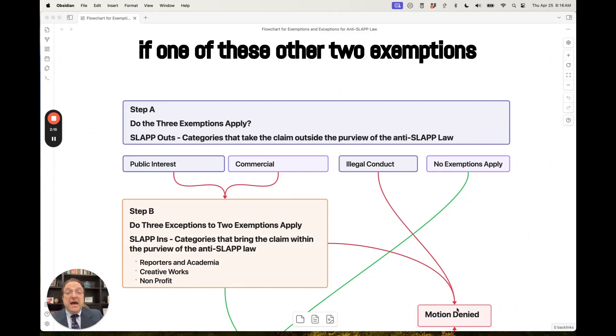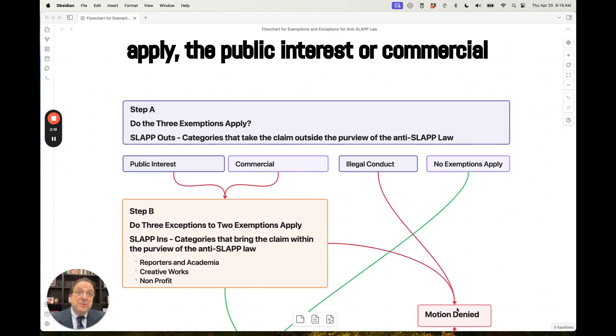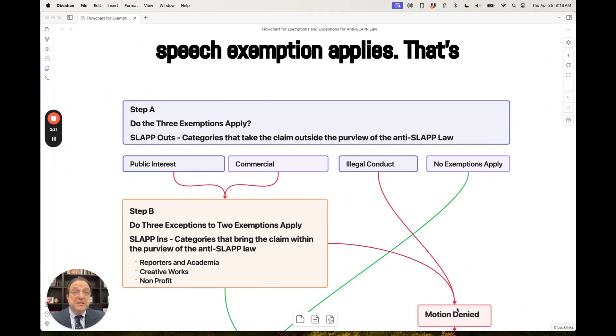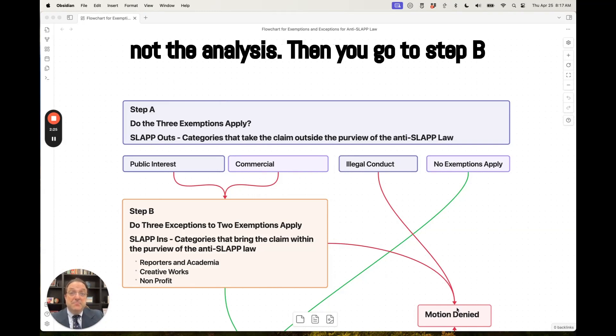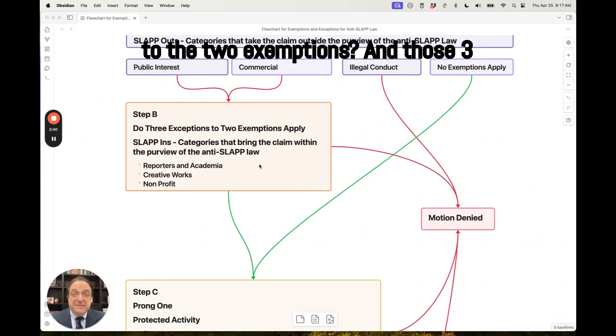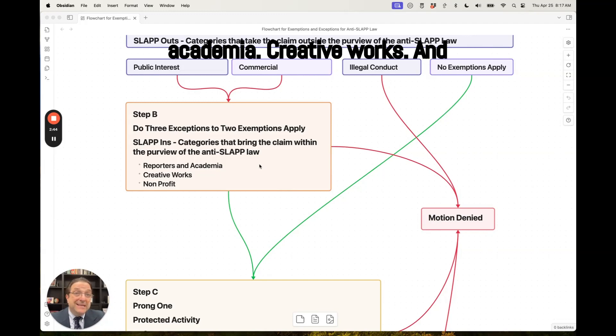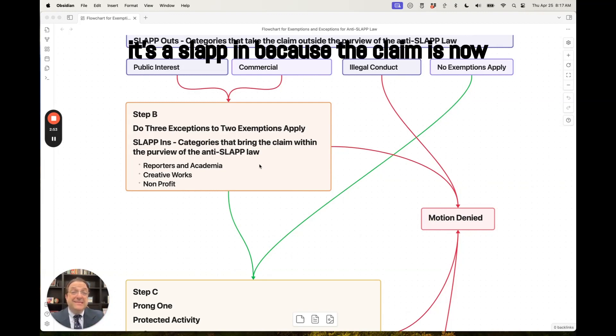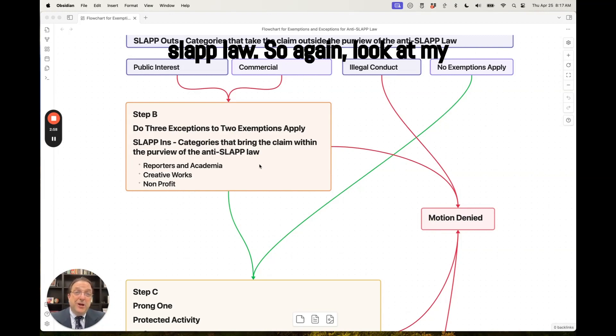But if one of these other two exemptions apply, the public interest or commercial speech exemption applies, that's not the end of the analysis. Then you go to step B and see, are there any exceptions to the two exemptions? And those three exceptions are reporters and academia, creative works, and non-profit. If one of those three exceptions apply, it's a SLAPP in because the claim is now brought back within the scope of anti-SLAPP law.